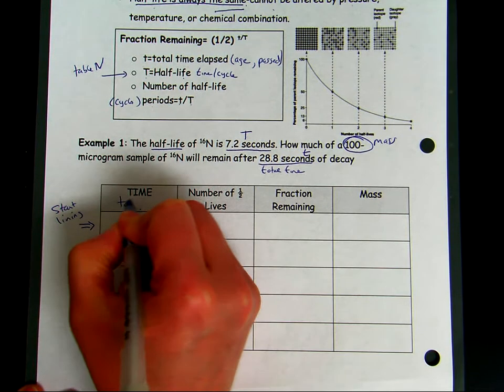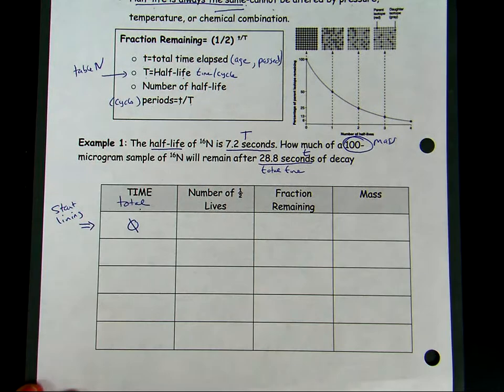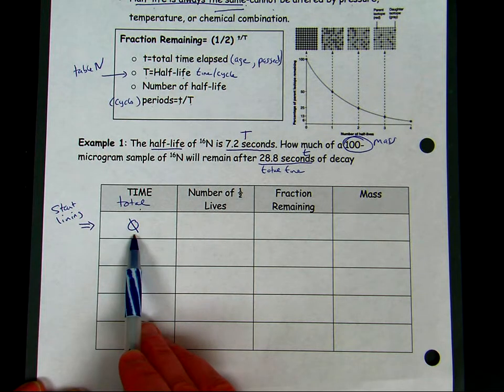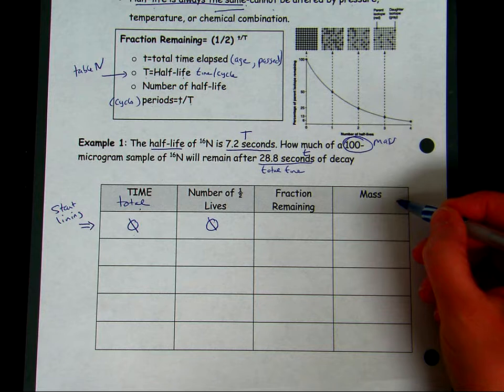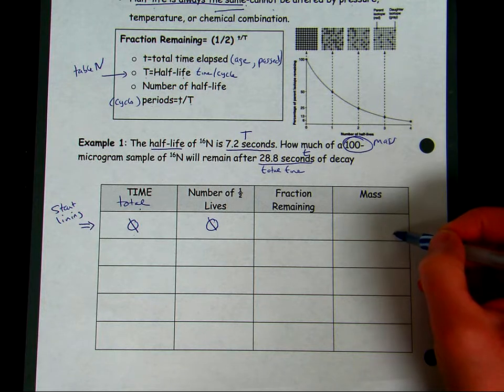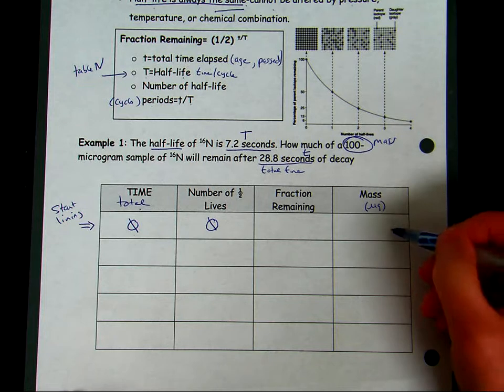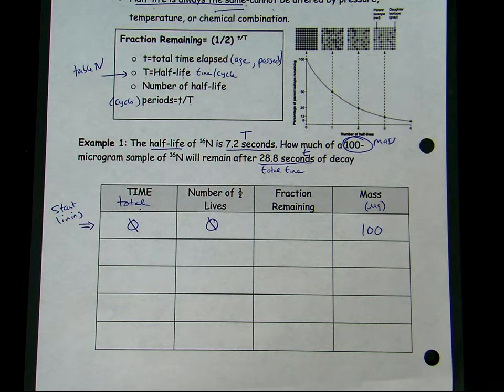How much time has passed? The race hasn't started, so zero time has passed. If no time has passed, that means zero half-life cycles have occurred. That means that the mass hasn't changed yet. In this problem it's given in micrograms, so that means that we still have 100 micrograms of the radioactive sample present.